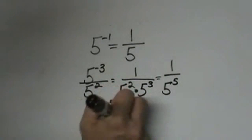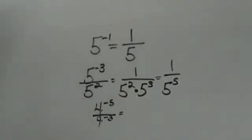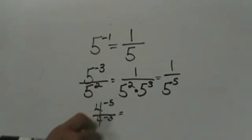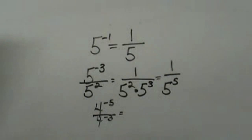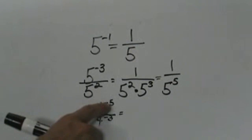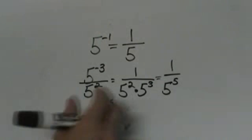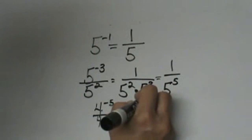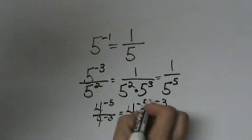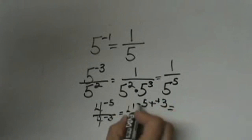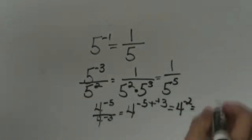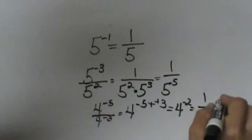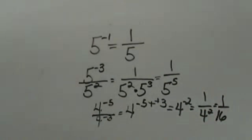Four to the negative fifth over four to the negative third. We can actually do this one a couple of different ways. When you are dividing like this you can subtract the exponents, or you can move and then simplify. You could take four to the negative fifth minus a negative third — so that's four to the negative five minus negative three. You just have to be careful with your signs. That's a double negative, so that would be negative five plus three, giving four to the negative two. We know it's on the wrong floor, so it would be one over four squared, or one sixteenth if we simplify all the way down.